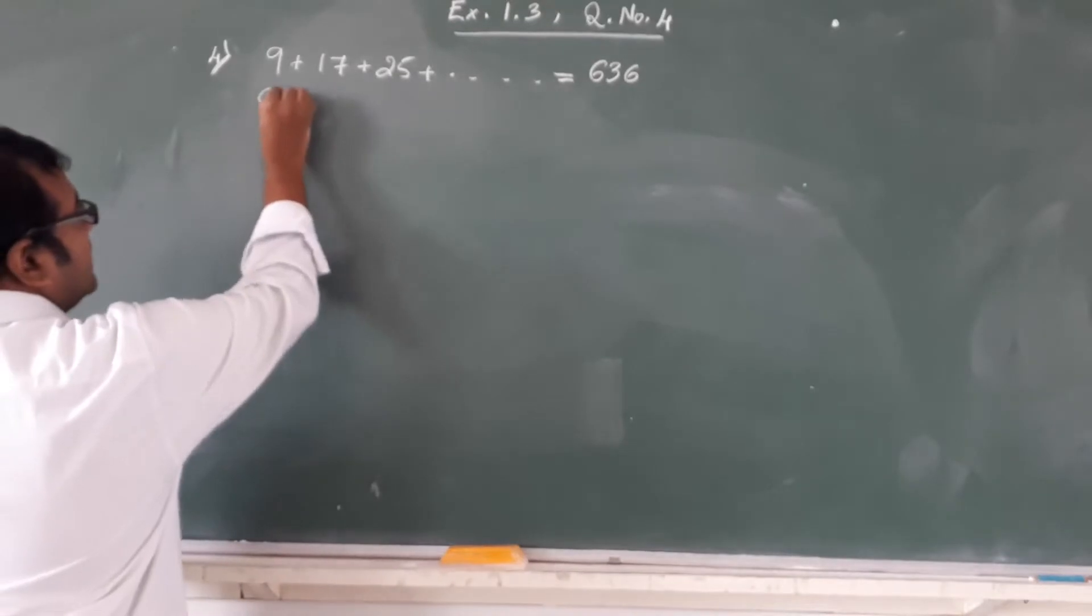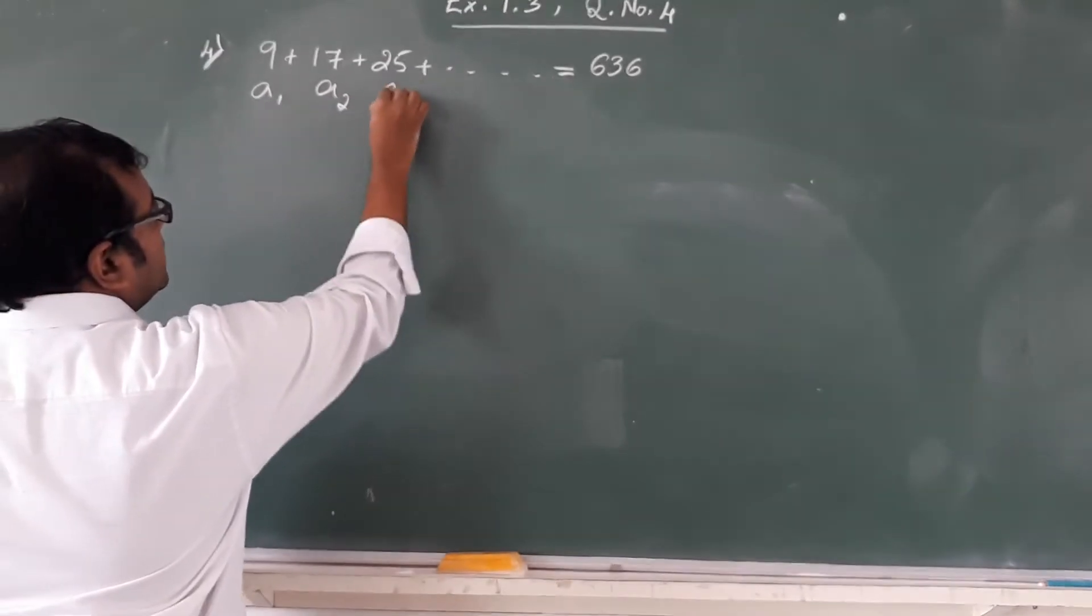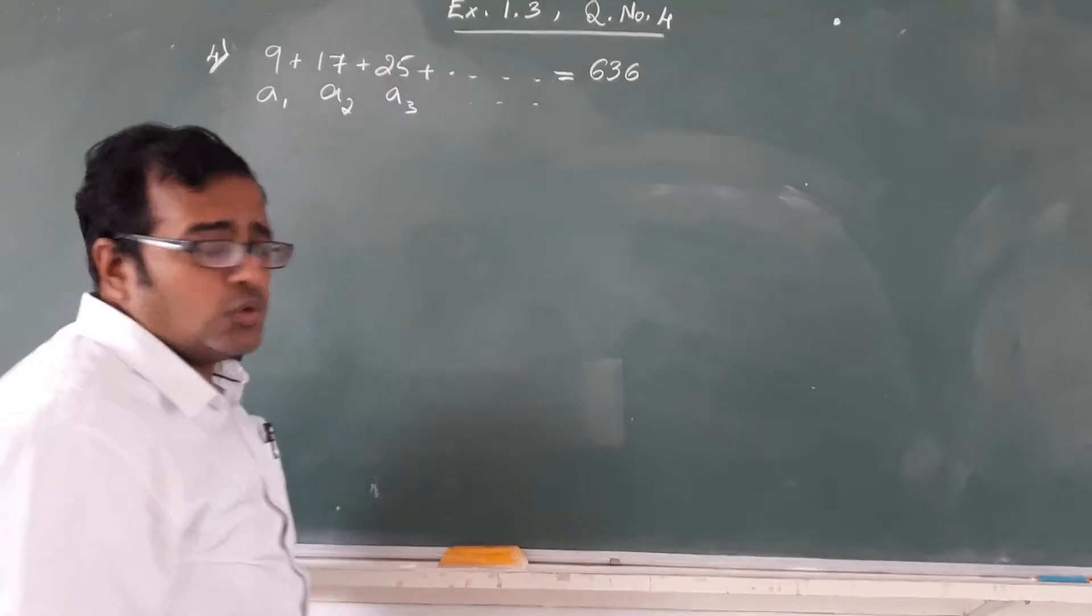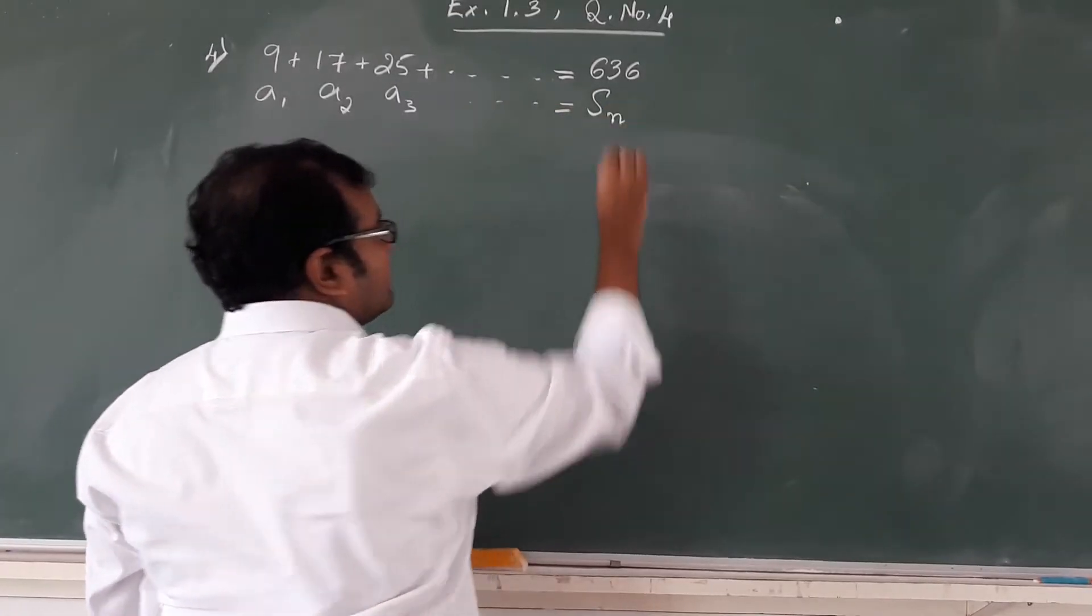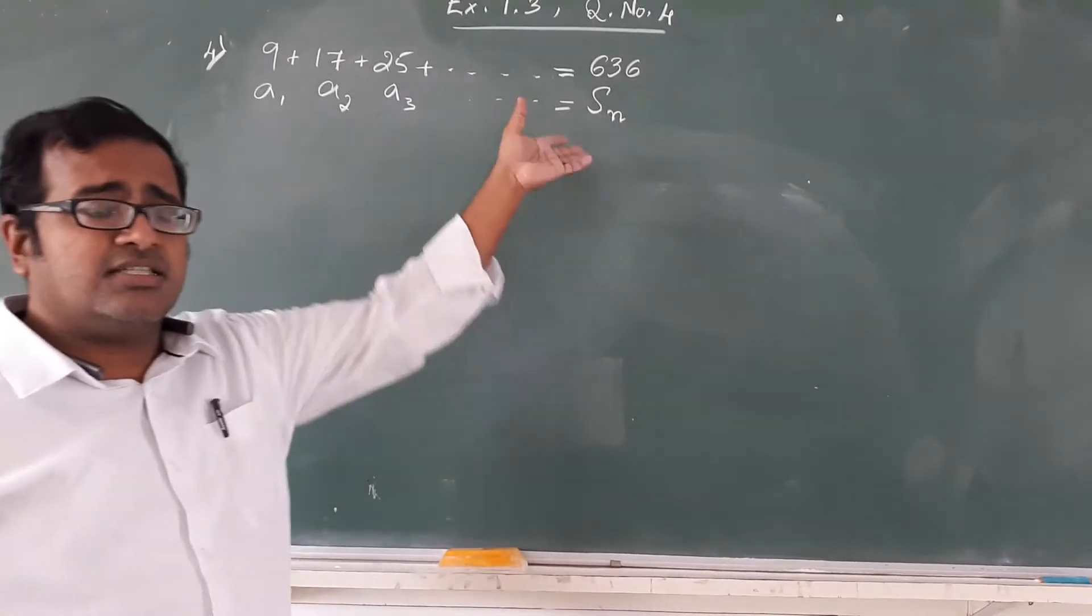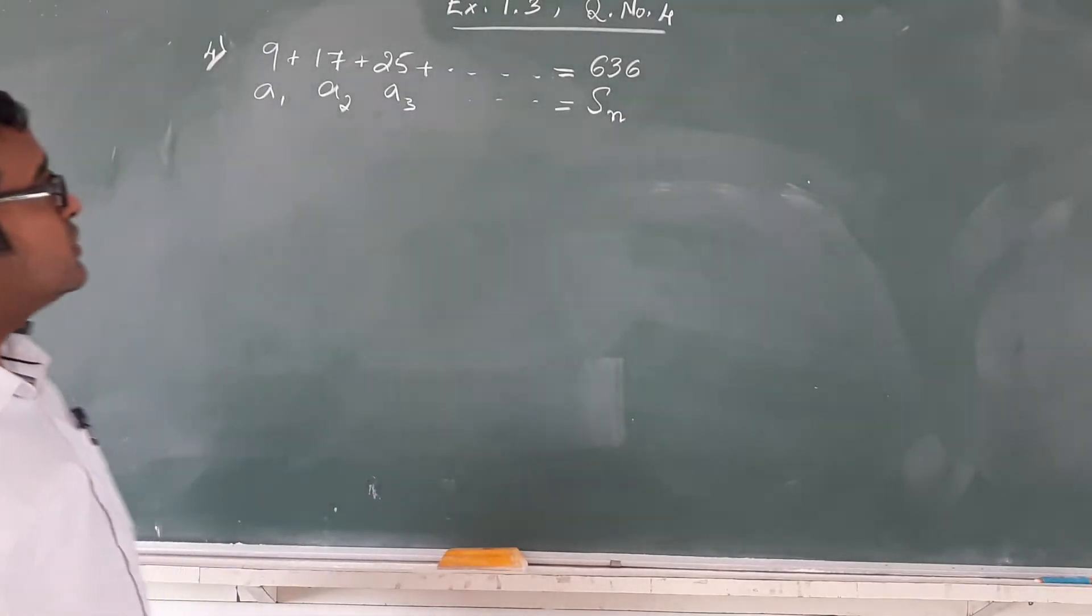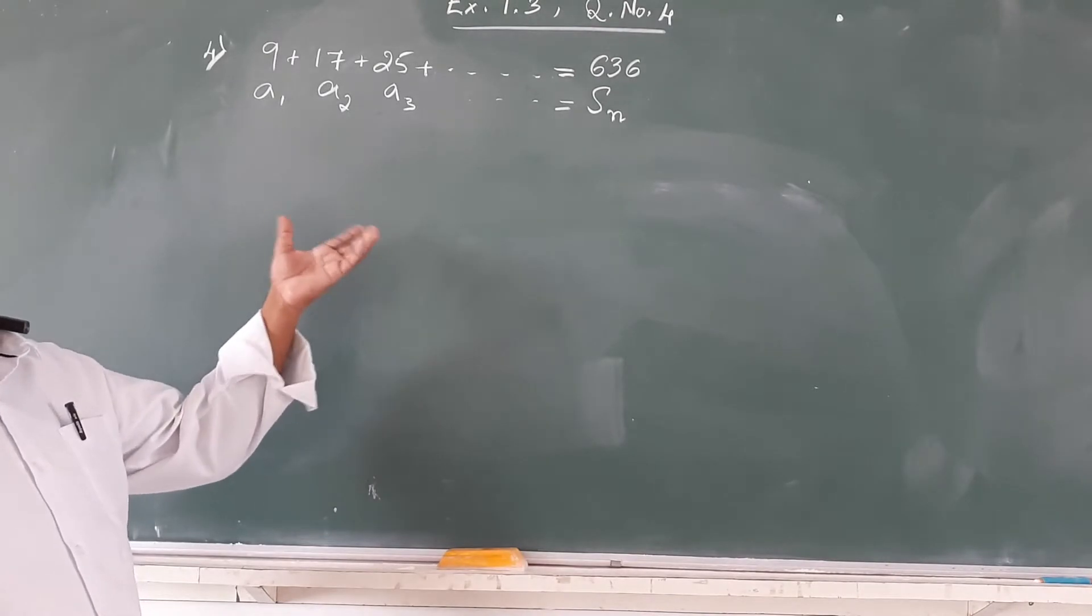These are A1, A2, A3, however, An is unknown. So what is this? This is nothing but sum of the first n terms. 636 is taken as Sn. So what all things do we know from here? We know the first term.